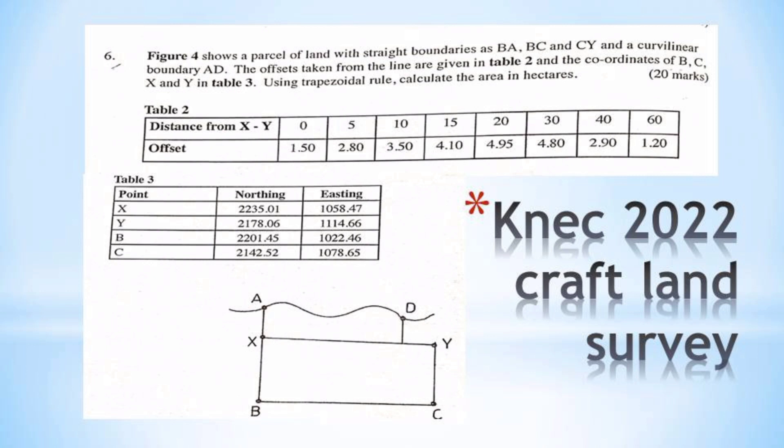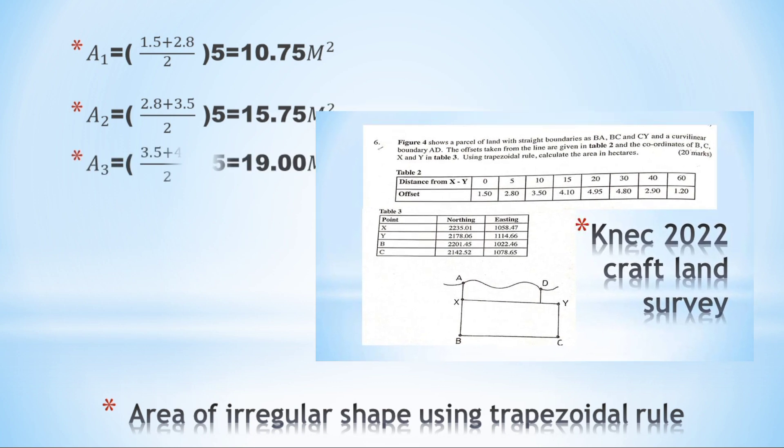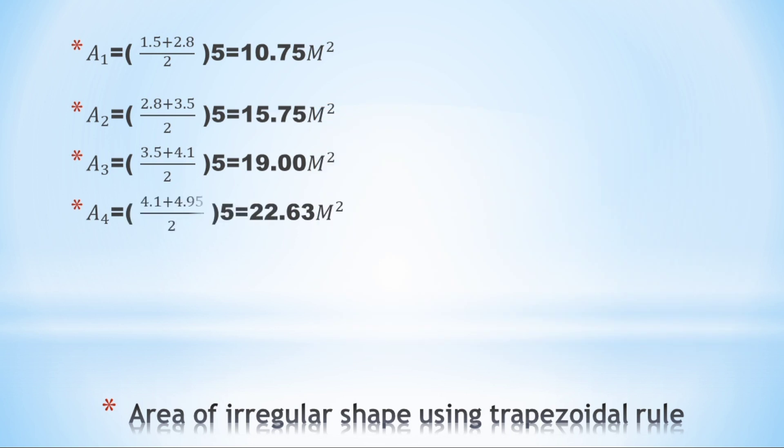The area of the first trapezoid is given by: Area 1 will be equal to ordinate 1 plus ordinate 2, divided by 2, times the distance between them.